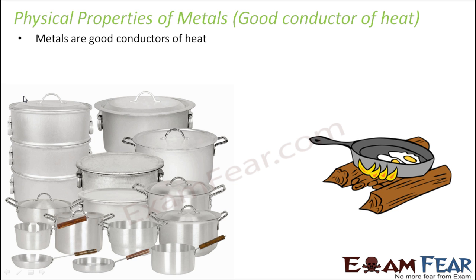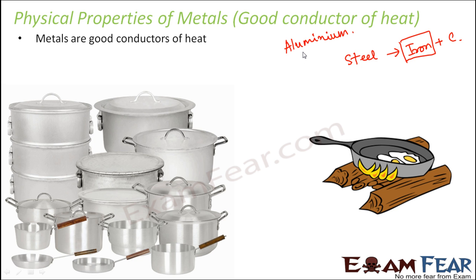Steel contains mostly iron with a small amount of carbon. Iron is a metal, while carbon is a non-metal, but steel majorly contains iron, and that makes steel suitable for cooking purposes. Aluminum utensils are also very suitable for cooking. The non-stick utensils you see these days — non-stick fry pans and bowls — are also made up of metal; it is just that they have a Teflon coating on top, but otherwise they are also made up of metals.